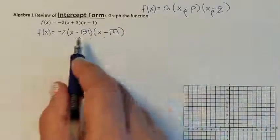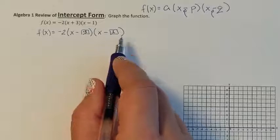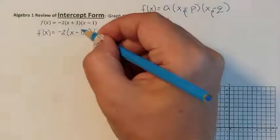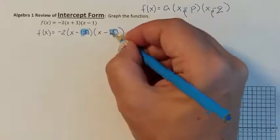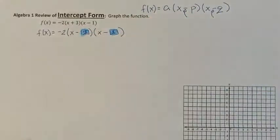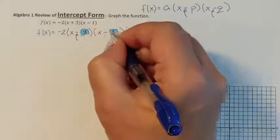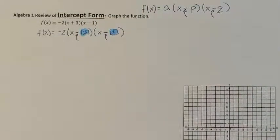So I have x minus a negative 3 and x minus a 1. This is true intercept form, so I can identify my p and q a little easier. This is going to be my p, and this is going to be my q. You have to remember that the minuses need to stay on the outside.